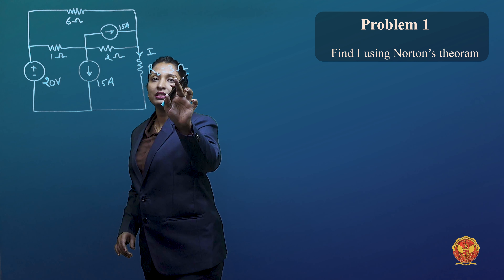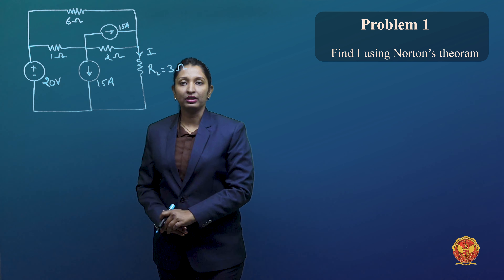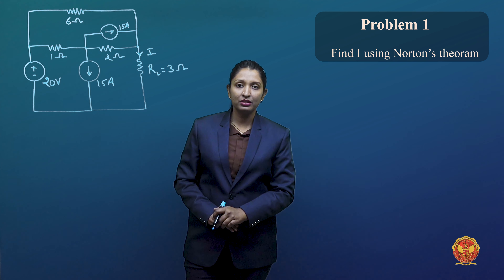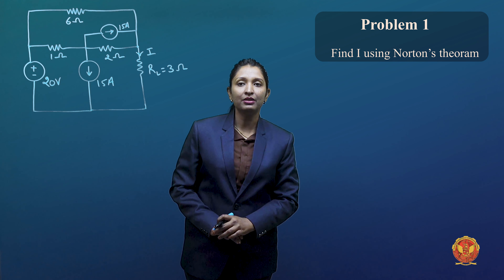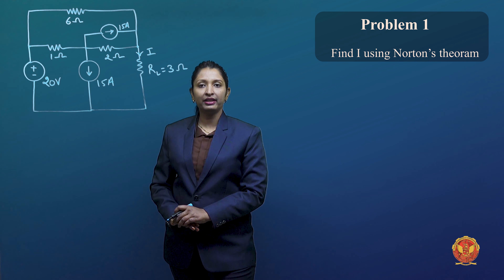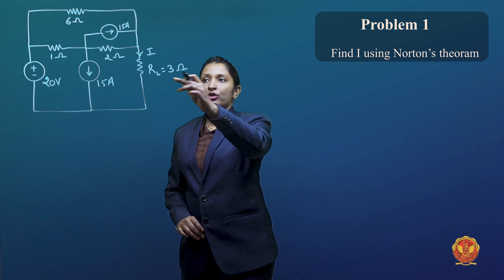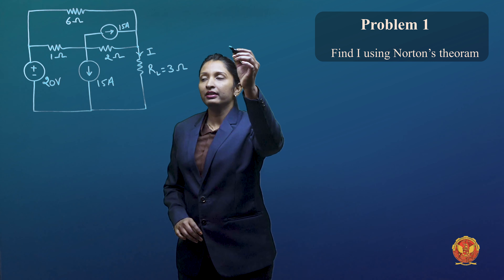Hello everyone. This question is based on Norton's Theorem. Here we are seeing that there are 3 sources connected, and we have been asked about using Norton's Theorem to find the current through the load resistance.